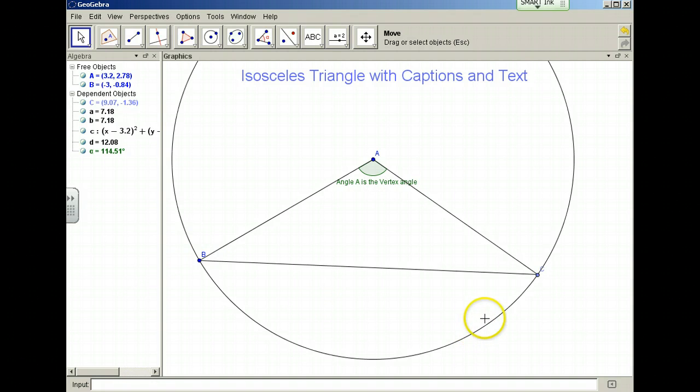Now, let's measure the base angles of this isosceles triangle. So I will measure angle C, B, A. That has been given the name beta. And I'll also measure angle A, C, B. That has been given the name gamma.